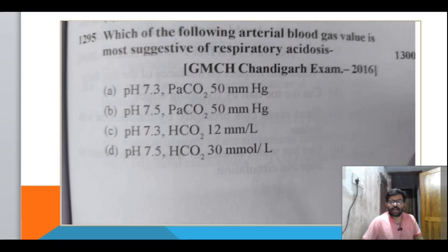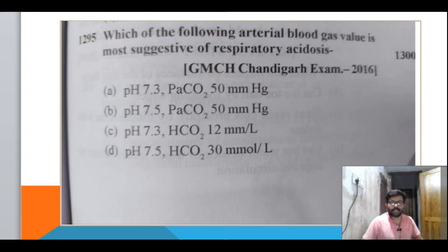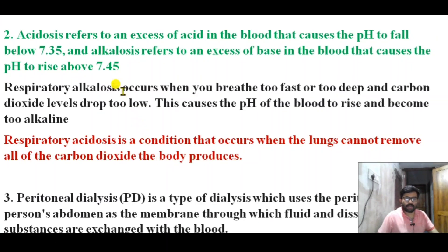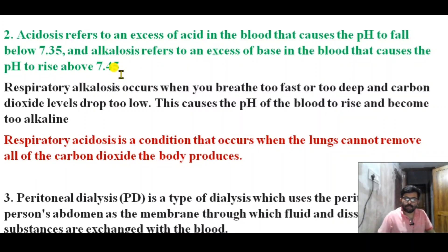Which of the following ABG blood gas values is most suggestive of respiratory acidosis? Respiratory acidosis involves a low pH. The PH in respiratory acidosis falls below 7.35 due to excess carbon dioxide, while alkalosis refers to excess base that causes pH to rise above 7.45.